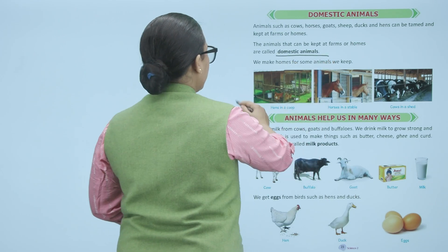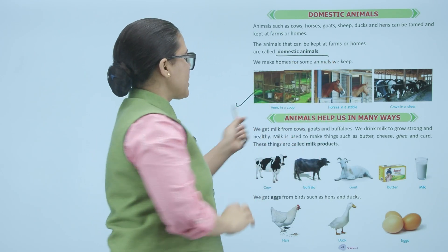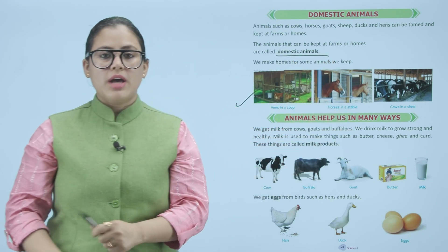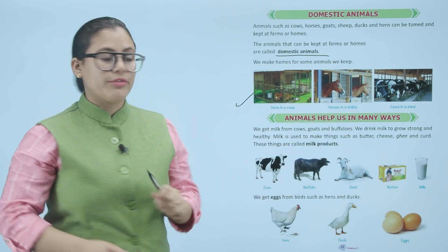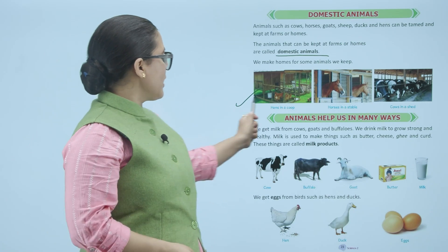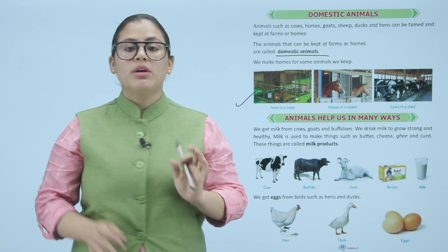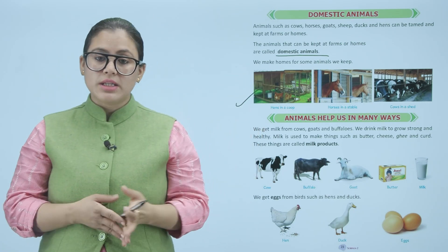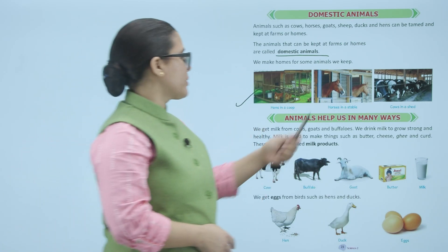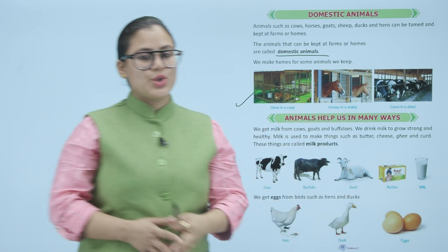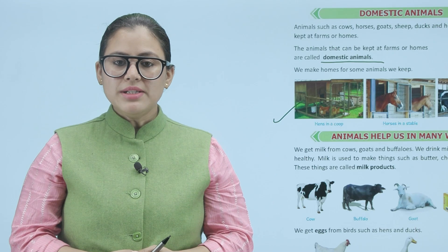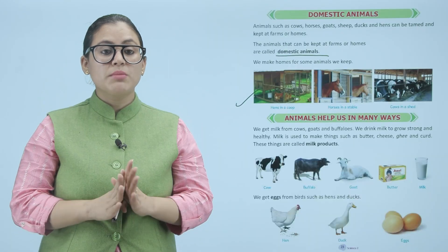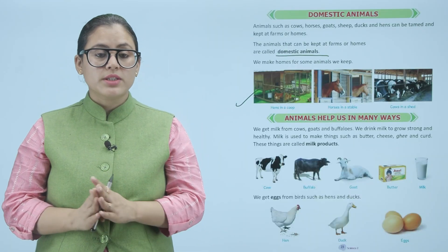Here are some examples of animal homes: hens live in a coop, horses live in a stable, and cows live in a shed. Animals help us in many ways. We get milk from cows, goats and buffaloes.